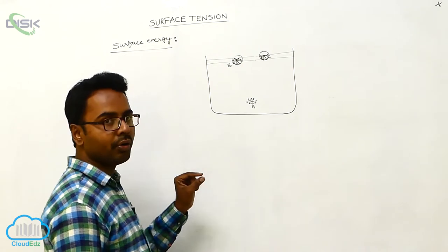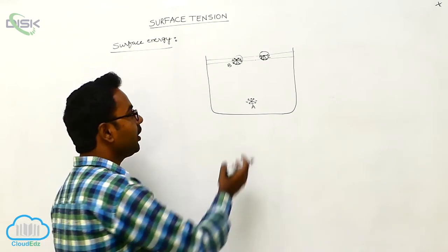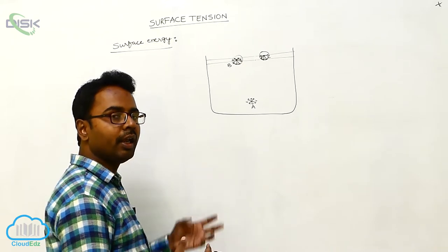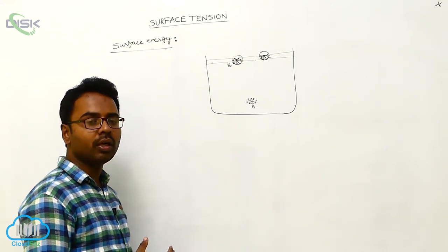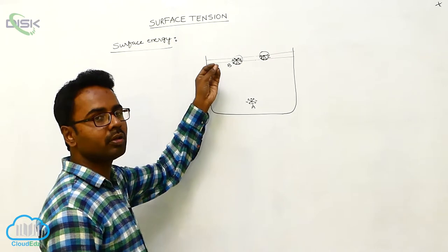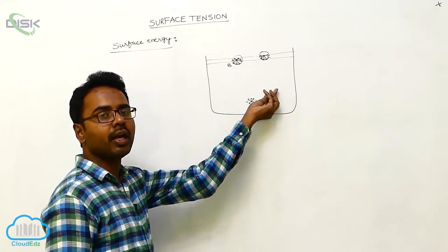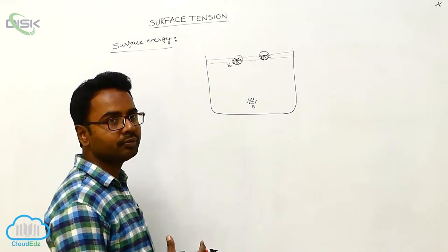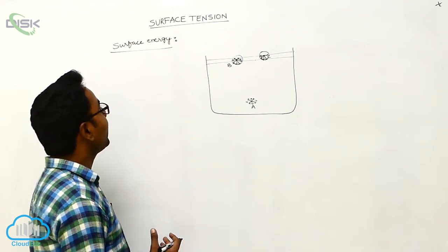Molecules present in the surface film and on the surface film experience a resultant downward force. Because of this, they move inside the liquid, leaving fewer molecules at the surface. This causes the surface area to decrease and the potential energy of the surface film also decreases. This is how the surface tension property works — molecules at the surface are under tension, the surface area decreases, and the potential energy decreases.